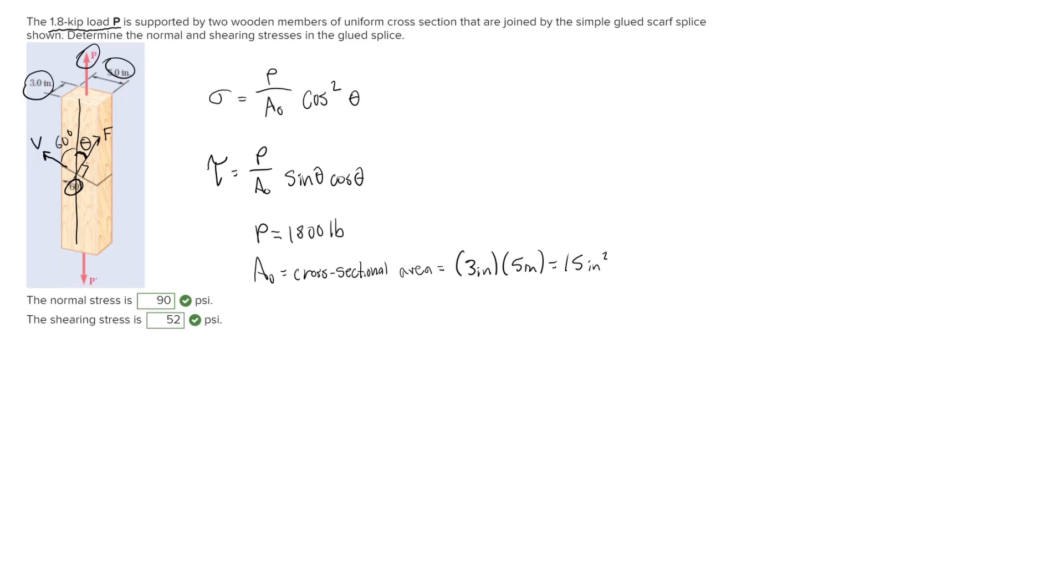This right here is a 90 degree angle, so 90 minus 60 gives us theta is 30 degrees. Now really all we have to do is just plug all this into our formulas. Let's solve for the normal stress first: 1800 pounds over 15 inches squared times cosine squared 30 degrees.